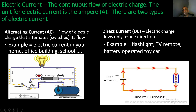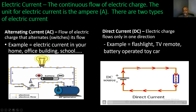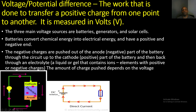Our next type is direct current, where electric charge flows only in one direction. Examples include a flashlight, TV remote, or battery-operated toy car. As shown in this example, the electrical current is only flowing in one direction — it's not alternating back and forth.